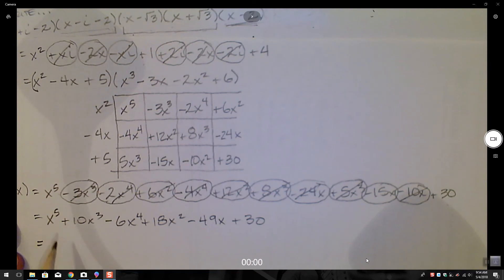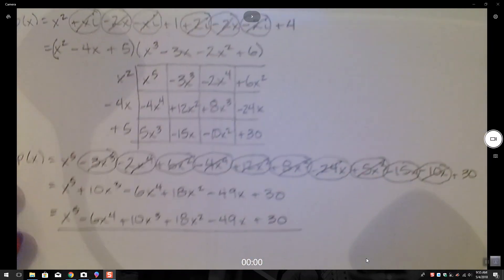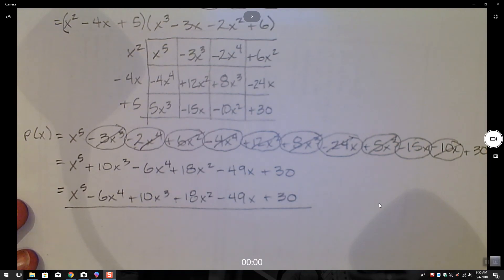So I'll just put them in standard order, which is x to the fifth, minus 6x to the fourth, plus 10x to the third, plus 18x squared, minus 49x, plus 30. I believe we're done. I'll check the book later to make sure.